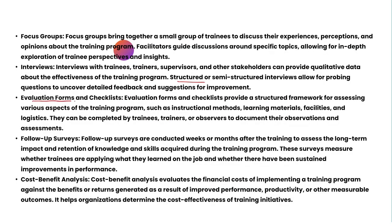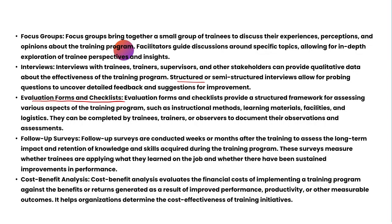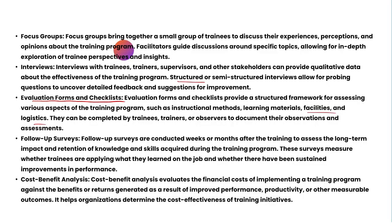Next are evaluation forms and checklists, which provide a structured framework for assessing various aspects of the training program — including instructional methods, learning materials, facilities, and logistics. Questions may cover whether people were happy, whether the temperature was adequate, whether seating was comfortable, whether instructional methods were adequate, and whether learners could learn from the materials provided. A checklist or survey can be prepared and used to check whether the training was effective.